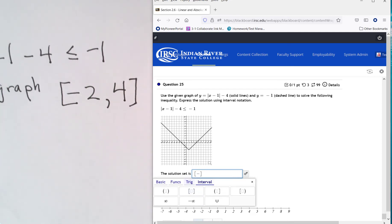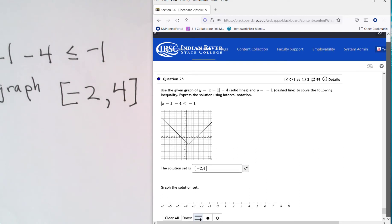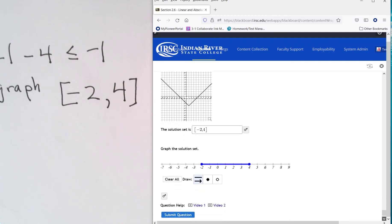Negative 2 comma 4 and if we want to graph it on here, so I have brackets, so close circle on negative 2 and 4. Shade in between and we'll make sure that's correct.